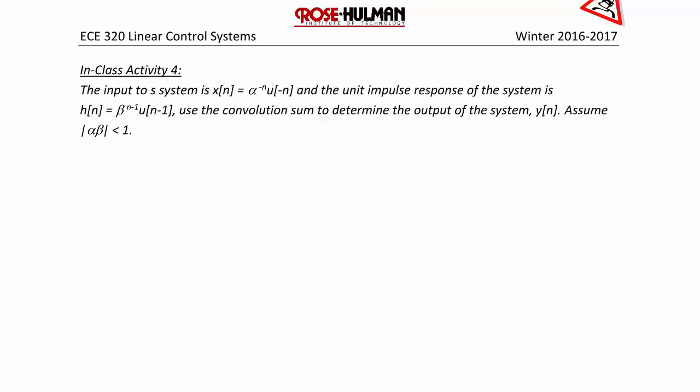In class activity 4, the input to a system is x[n] = α^(−n) · u[−n], and the unit impulse response of the system is h[n] = β^(n−1) · u[n−1]. Use the convolution sum to determine the output of the system, y[n].